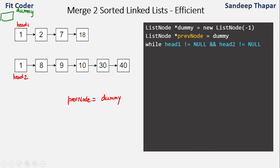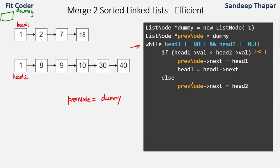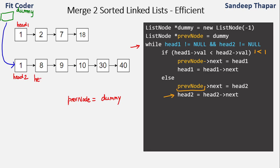We run a while loop until either linked list has been fully traversed — while head1 is not null and head2 is not null. Both start with value 1, so we come to the else part and link previous node's next to head2. Previous node is dummy, so we make the link from dummy to head2. We then move head2 to the next node, which is 8, and advance previous node to point at 1.